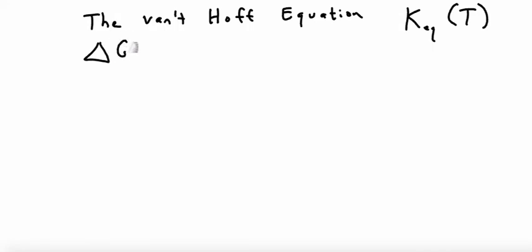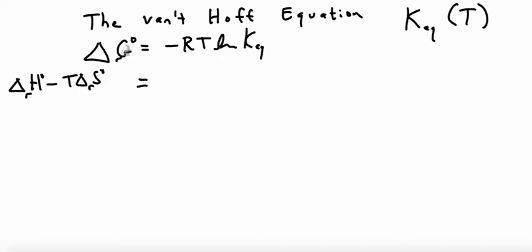We start off by stating that we can relate delta G standard to negative RT log of K equilibrium. And then we replace the left hand side with delta H standard minus T delta S standard. So this is just of course saying delta G is equal to this. We'll bring down the right hand side. And now what we're going to do is divide both sides by negative RT.